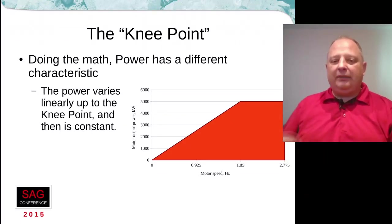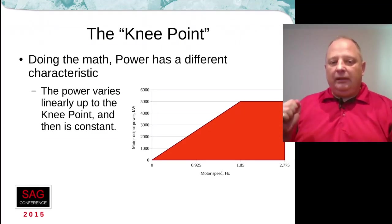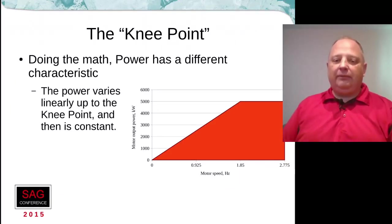At zero speed you have zero power available, and the power available from that motor increases linearly up until you reach that rated speed. Beyond that rated speed, the amount of power available to you is fixed. So zero speed means zero power but maximum torque in this model. Key thing: if you are operating that mill below the rated speed of the motor, you do not have the full power of the motor available to you. You have to operate at or above that rated speed to have the full nameplate power available.